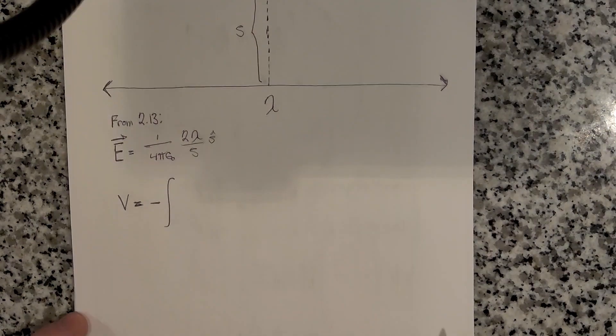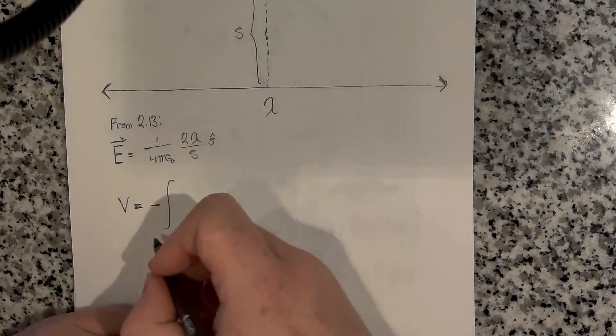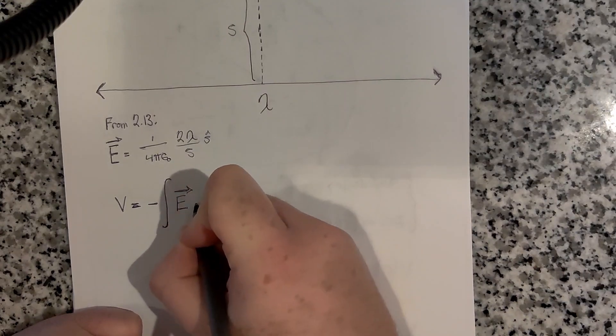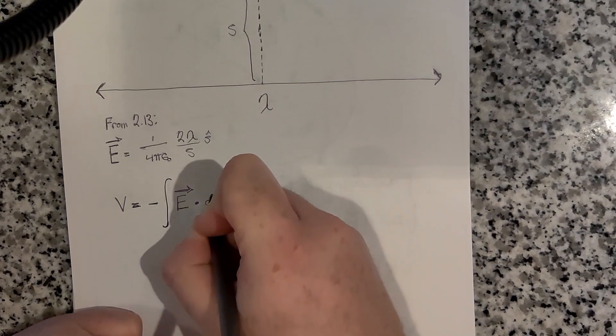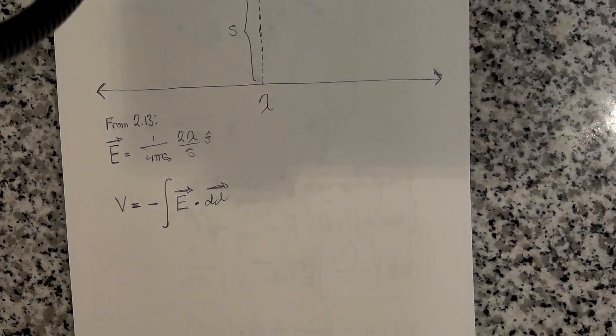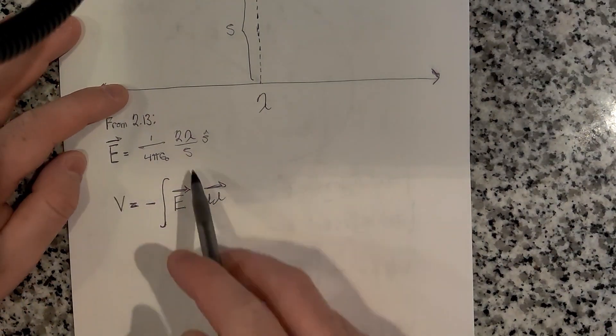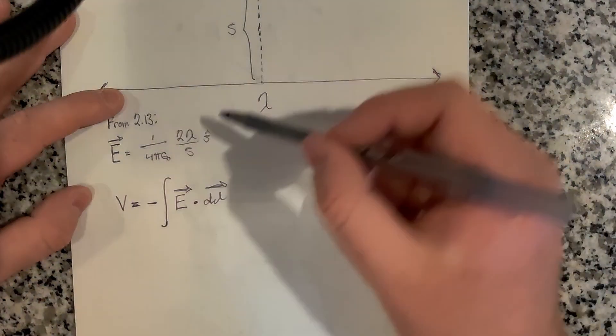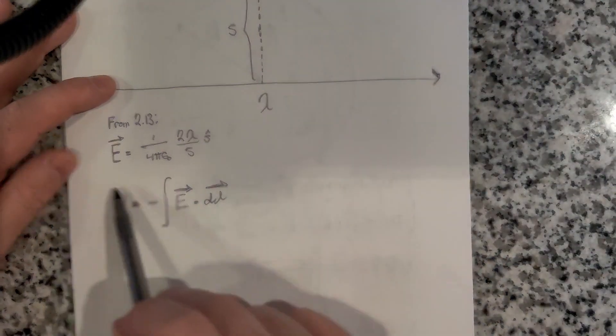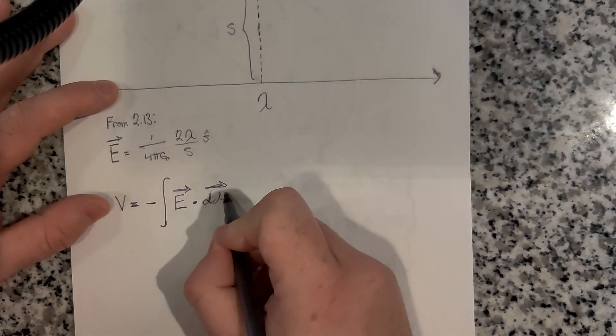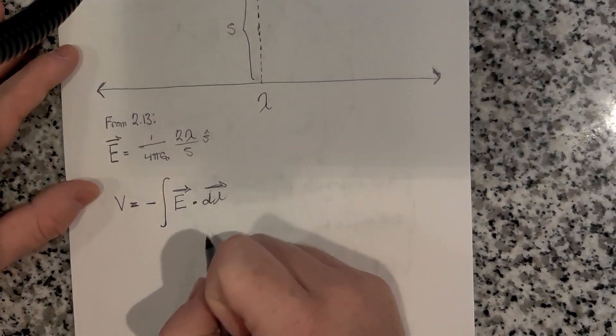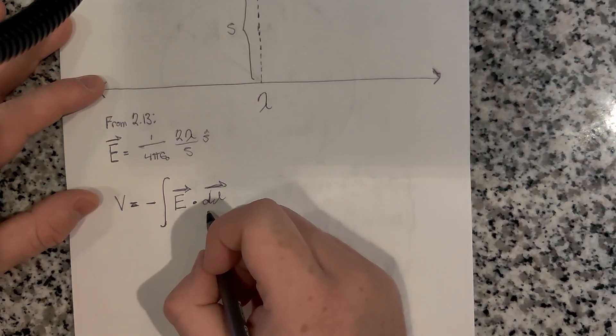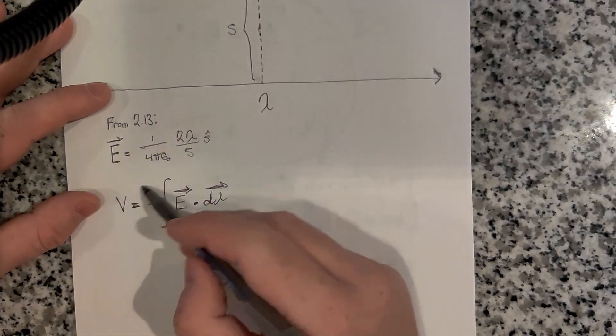I've started writing down the equation for the potential, which is equal to negative of the integral of E·dl. We know there's only one space here to really deal with. The electric field in the region of our point is equal to this. You could think about this in cylindrical coordinates. Our electric field only has an s-hat component.